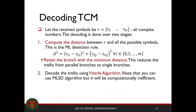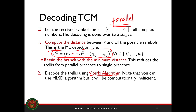Now, how do we decode the Trellis-coded modulation? It's the same as your convolutional code. Since it's based on a convolutional code, you'll have to use the Viterbi algorithm for that. But first, since you have parallel transitions and your symbols are dependent on the symbol constellation, you have to redefine your cost function. It will now have an in-phase part and a quadrature part. Using this, you retain the branch with the minimum distance — the same as in your Viterbi algorithm.